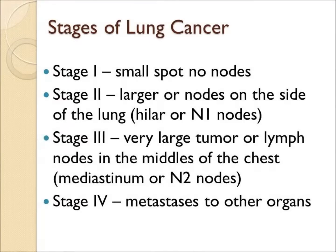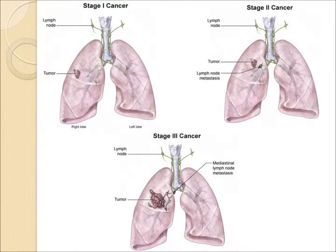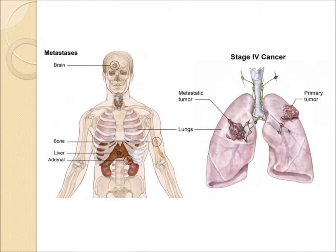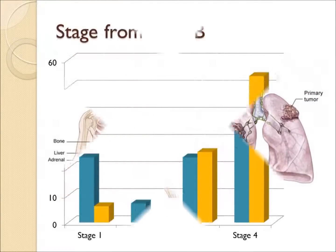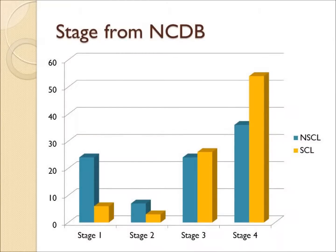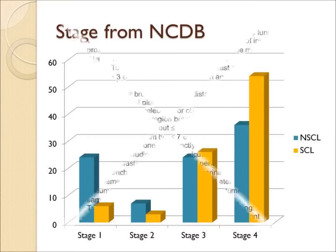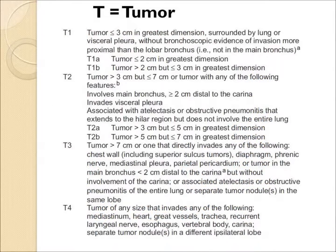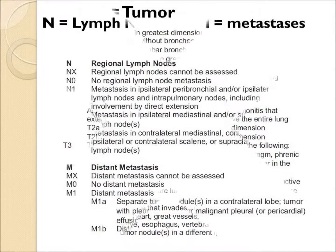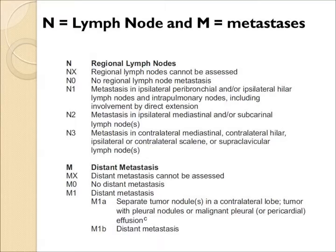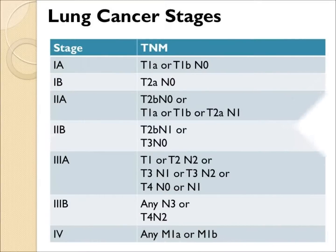Stage 1 is a small spot with no nodes. Stage 2 is a larger tumor with N1 lymph nodes on the side. Stage 3 involves the middle section or mediastinum — N2 lymph nodes. Stage 4 involves areas of metastases; unfortunately, lung cancer commonly spreads to the brain, bone, or liver. Most patients nationally are in stage 3 or stage 4. The details of the staging system are called TNM — T for tumor, N for lymph nodes, and M for metastases — and these are grouped into staging categories.